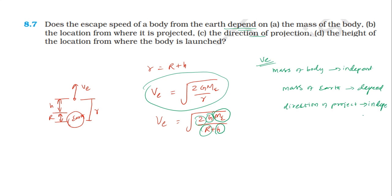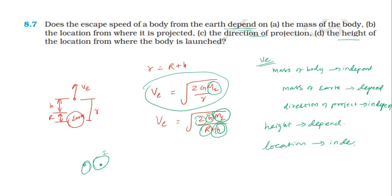Height is dependent — escape speed depends on height from the earth surface. As for location — whether launched from India or America — location is independent. Mass of the body is independent, direction is independent, and mass of the body is independent.